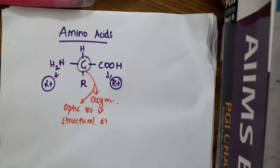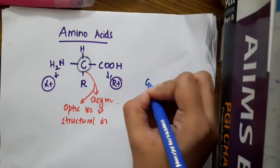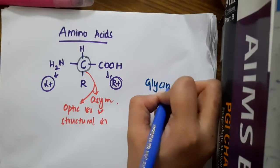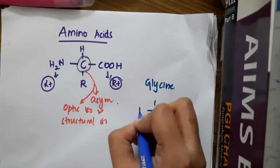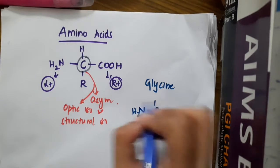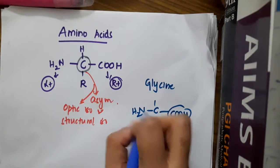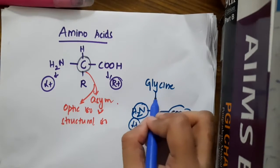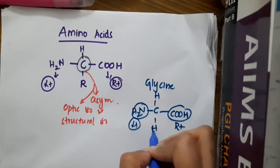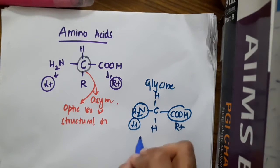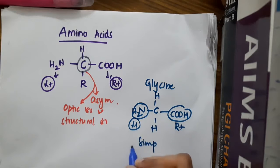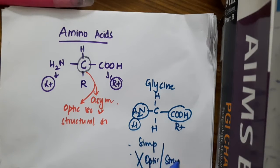Is there any amino acid which is not asymmetric? Yes — glycine. Glycine contains an NH2 amino group on the left side and a carboxyl group on the right side, but it has two hydrogen atoms attached to the carbon atom. It is the simplest amino acid and has no optical isomerism or structural isomerism.